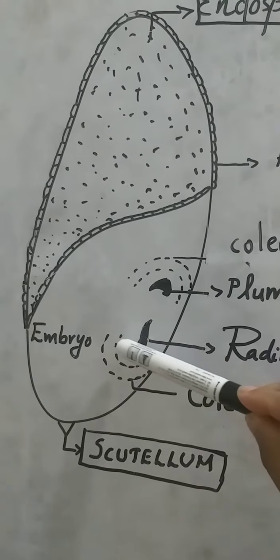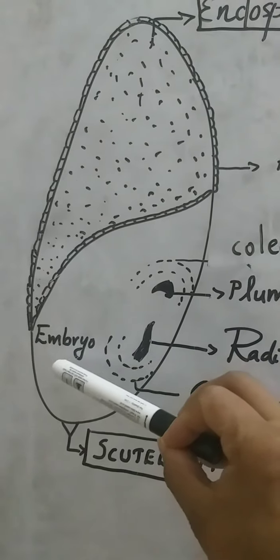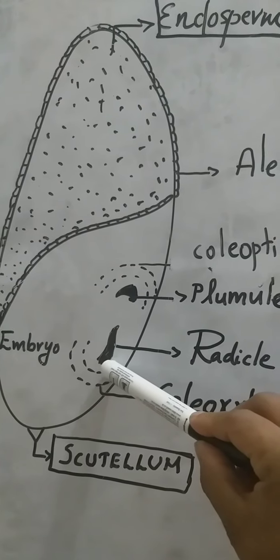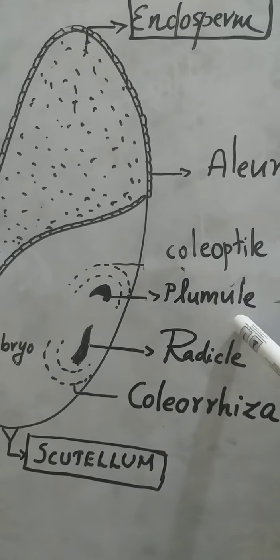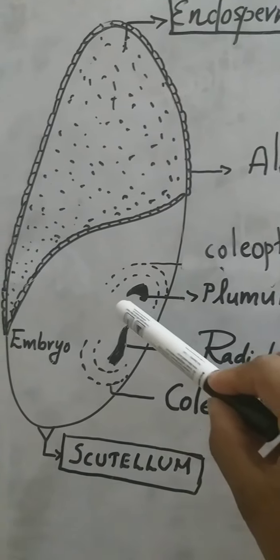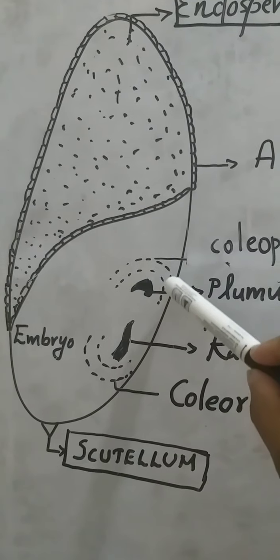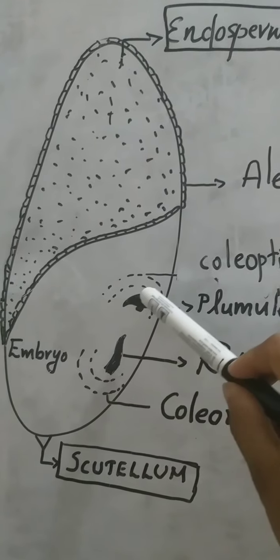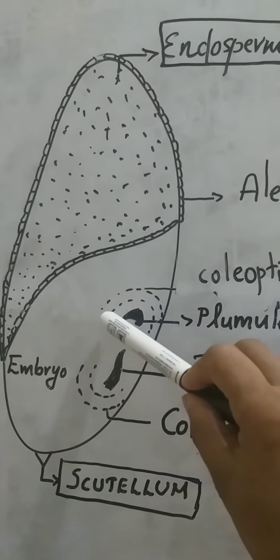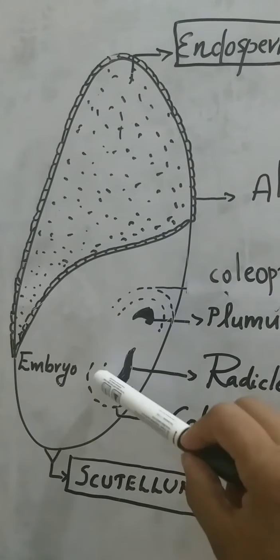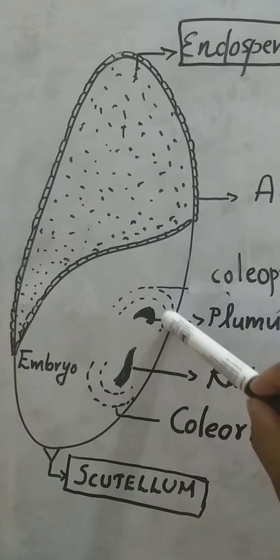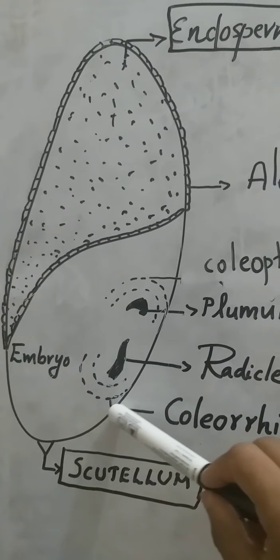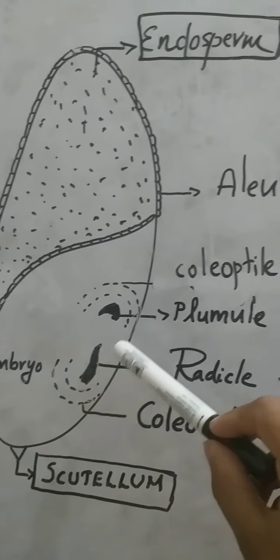The nutritive tissue inside the endosperm is utilized by the embryo during seed germination. Regarding the monocot embryo, it has two different parts: plumule and radicle. One peculiarity of the monocot embryo is that both plumule and radicle are covered by specialized infolded leaf-like structures, which you can see around both the plumule and the radicle.